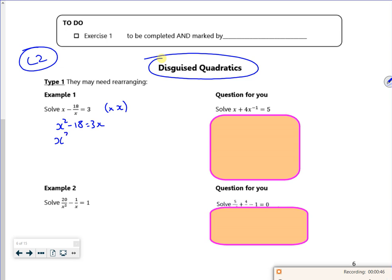And if I make it look like a quadratic, there we go. I've got that now, so I can just put that straight into poly and it gives me x is minus 3 or x is 6.